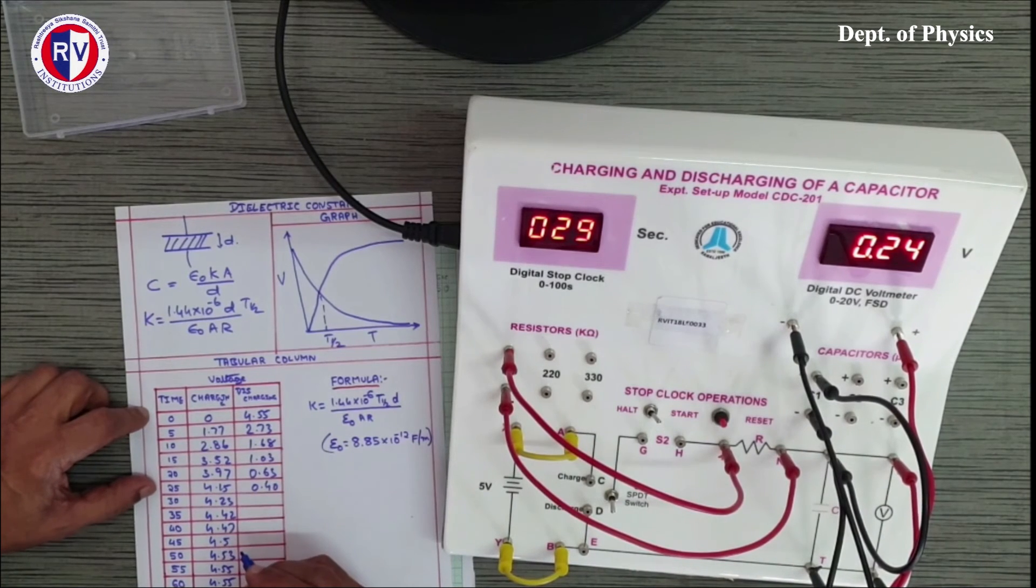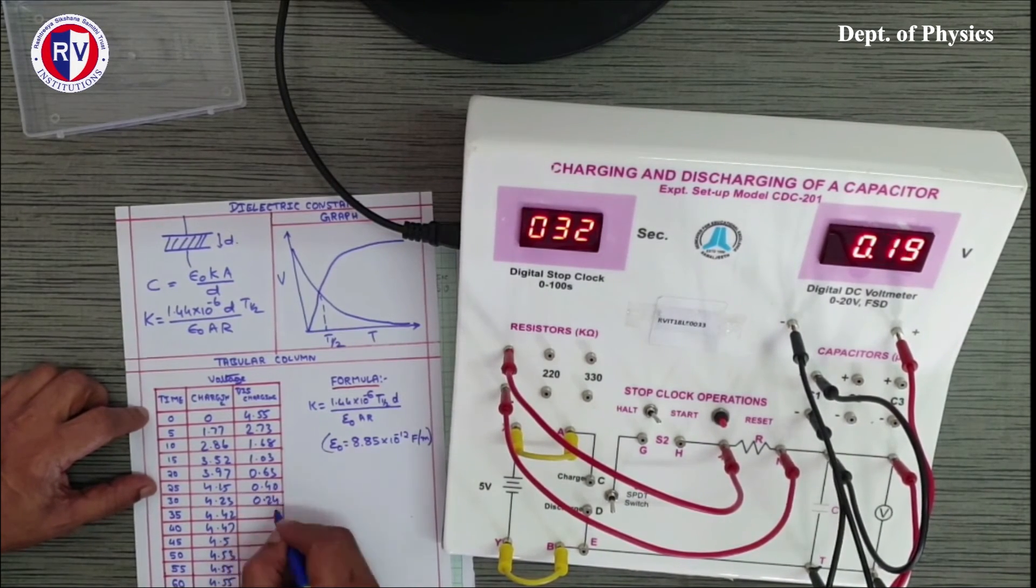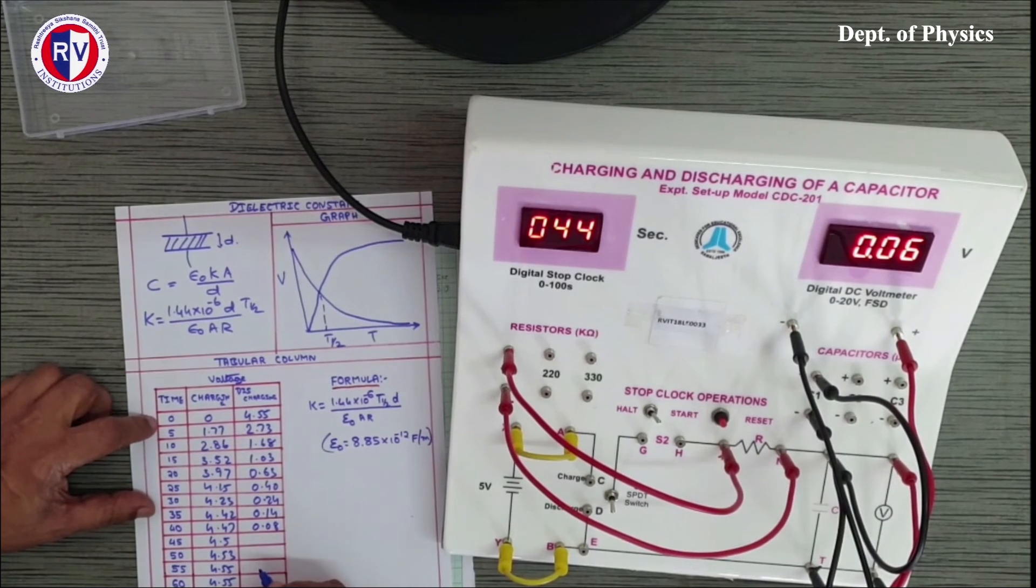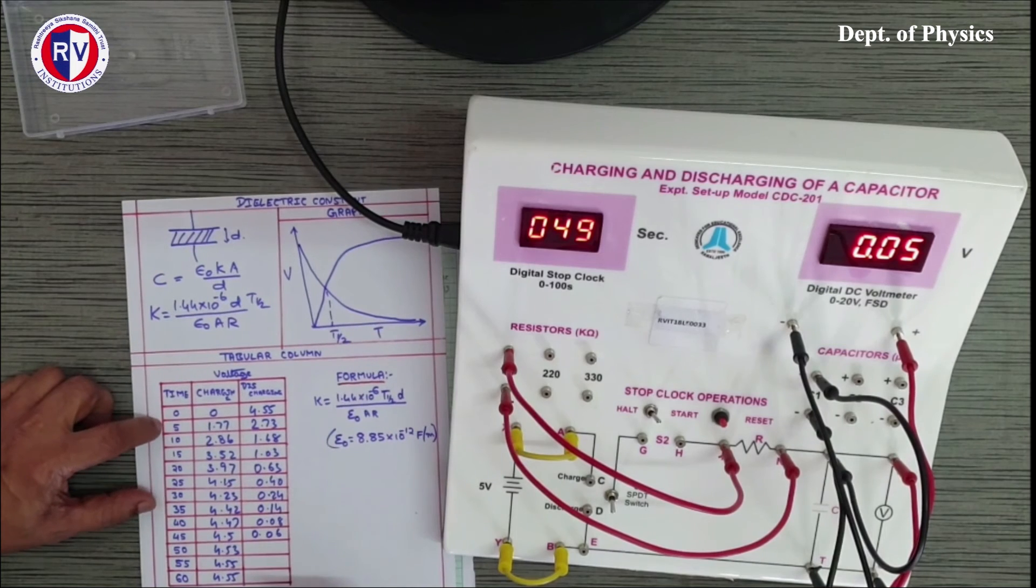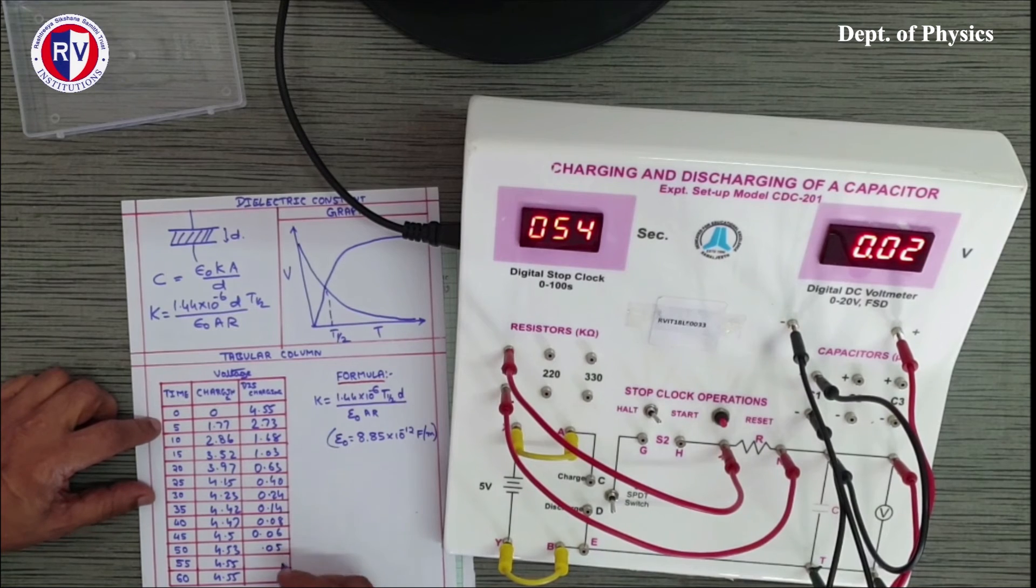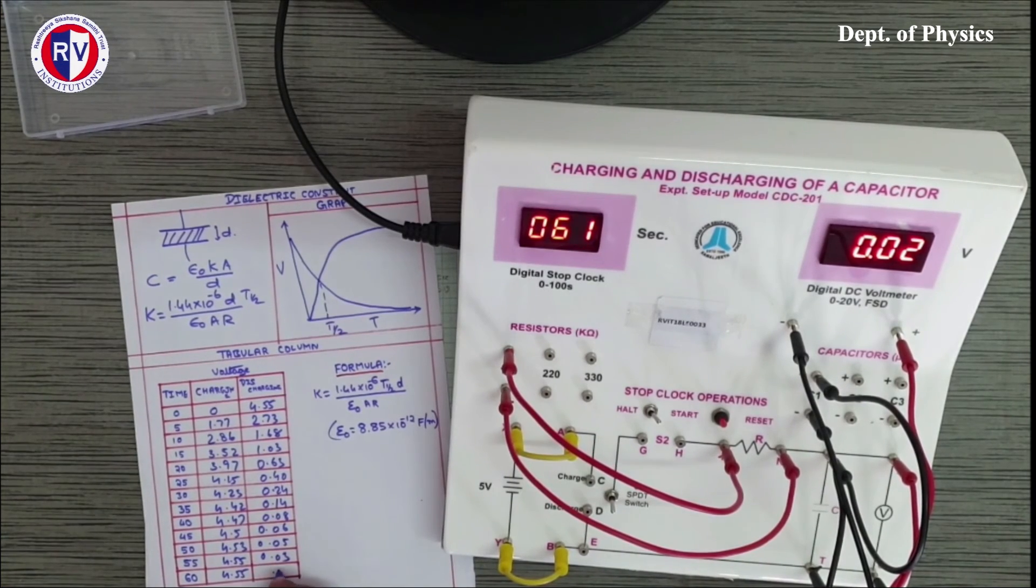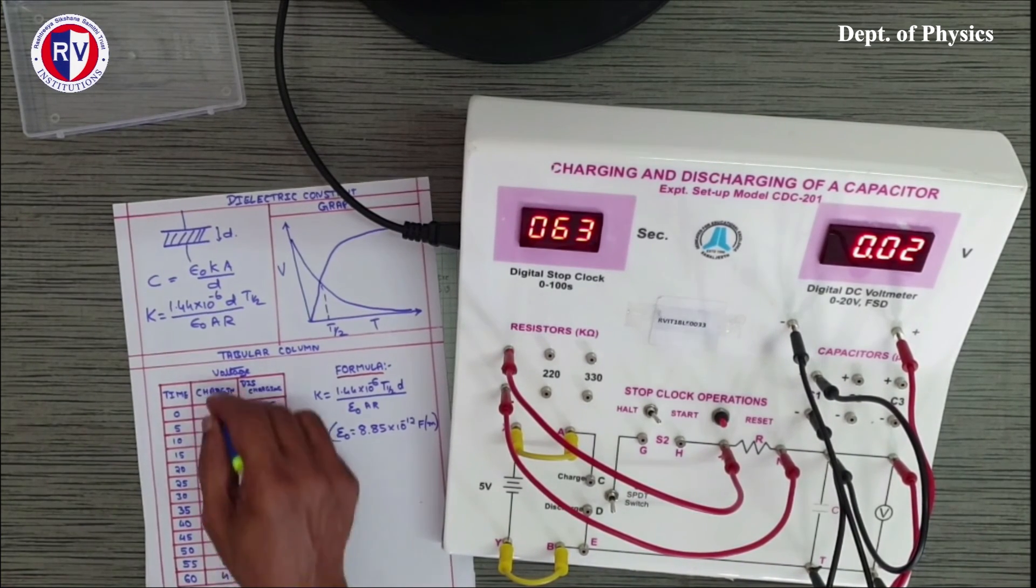This way voltage is coming down, very fast it will come down to zero. Almost 40 seconds it is nearing zero, 45 is 0.06, 50 is 0.05. This way 55 it is 0.03, so by 60 it is very close to 0.01. Here we can stop the experiment.